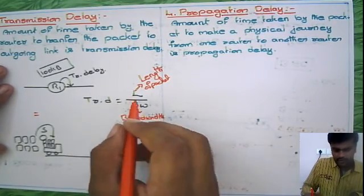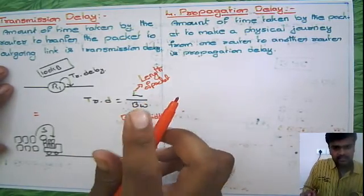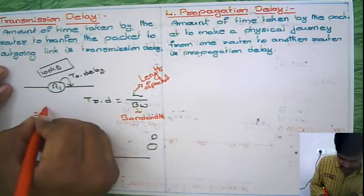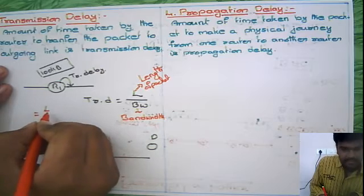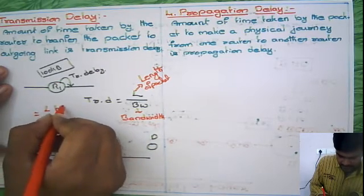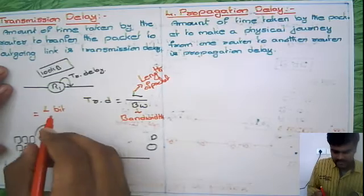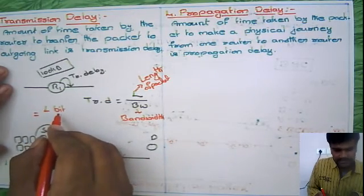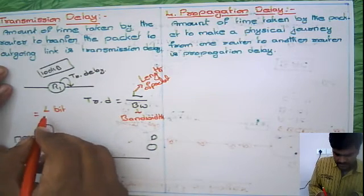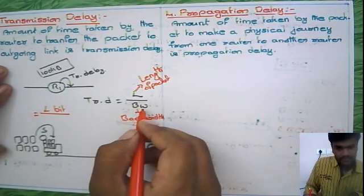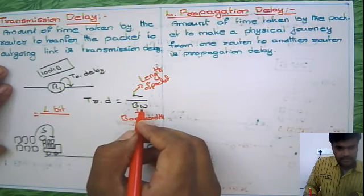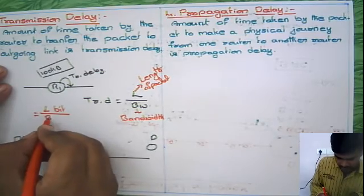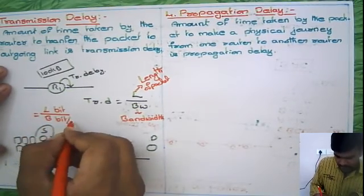You have to get the final answer in terms of time. If you see, length will always be in bits or bytes - 100 bits, 1000 bits, or 1000 bytes. If you are representing length of the packet, then bandwidth means bits per second or bytes per second.